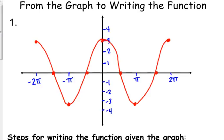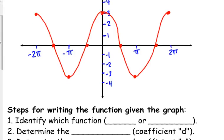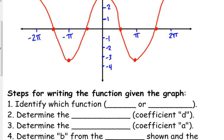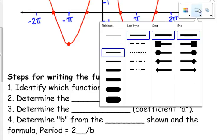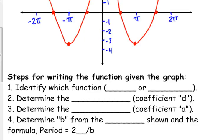So, here's the first one that we're going to write the equation of. The first thing we've got to identify is we need to determine, is this sine or is this cosine? The easy way to determine that is you look at, does it start at the origin or is it off the origin? Sine starts at the origin, cosine is off the origin or off the x-axis.